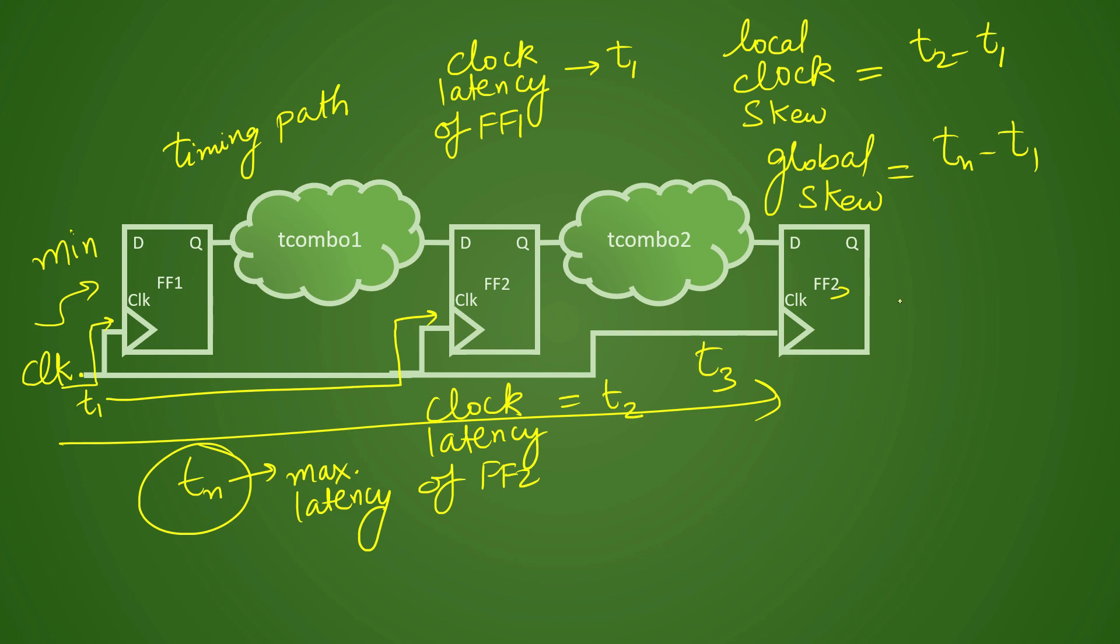That would be Tn minus T1, because it is taking unrelated timing paths, it might be related, might not be related, it is possible. That would be difference between this Tn minus T1. So this is your global clock skew and this is your local clock skew. In reality, the timing path will not look like this and the flip flop arrangement or the clock path arrangement will not be like this. This is just a logical representation.